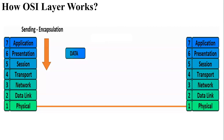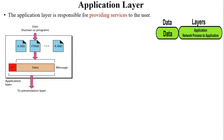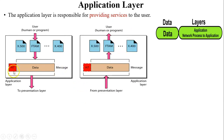Now we will discuss all the layers in detail, one by one. We will start with the application layer. The application layer is responsible for providing services to the user. All applications are connected with the application layer. When data comes from an application to the application layer, one header is added indicating which protocol is used for sending the data — it may be FTP, HTTP, or HTTPS. The details of this protocol are included in this header, and then data passes to the presentation layer.